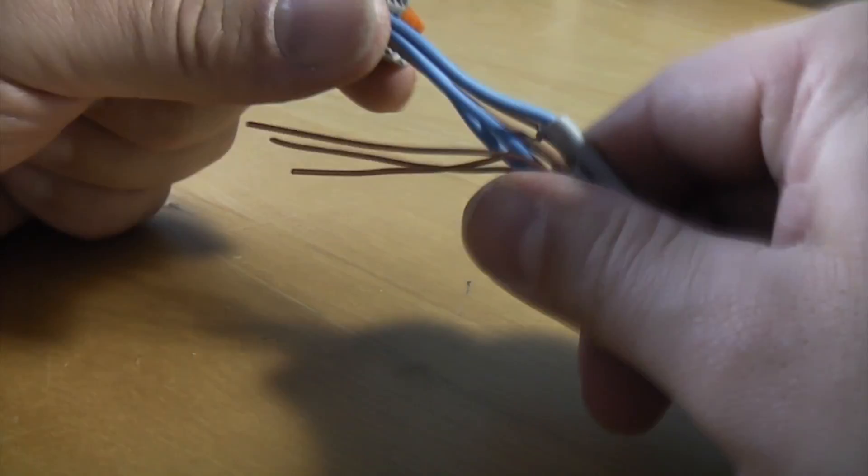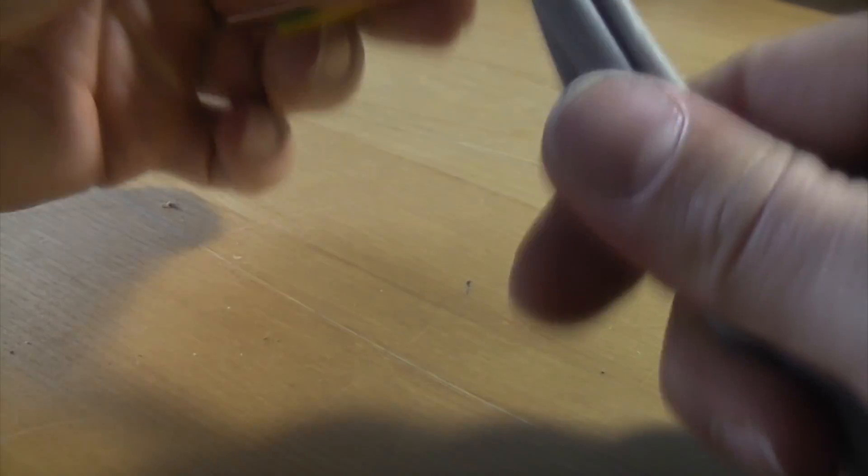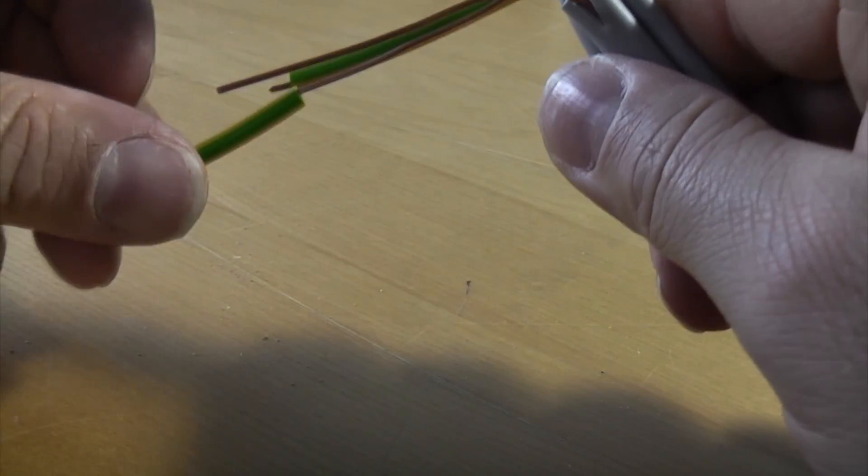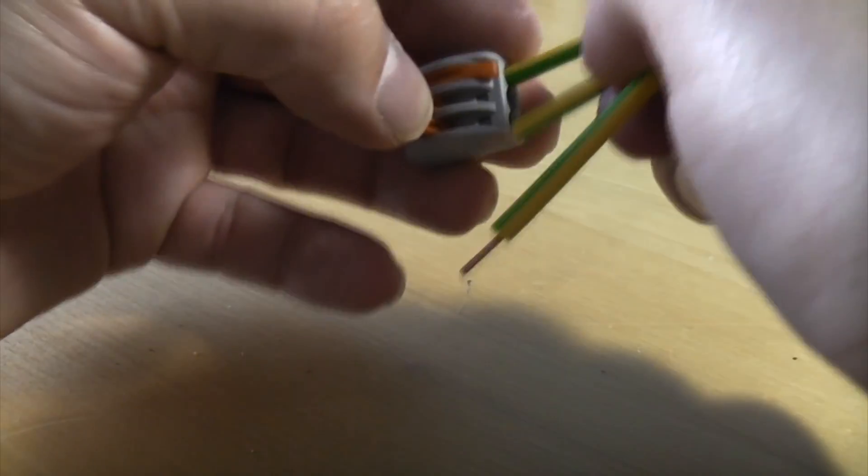Whenever you buy cable like this, the earth is never sheathed, so you have to buy the sheath separately and then sheath it yourself. That'll grip that.